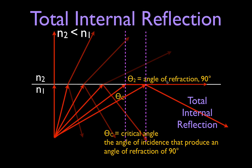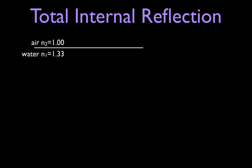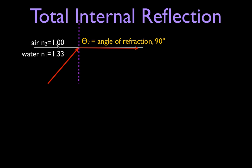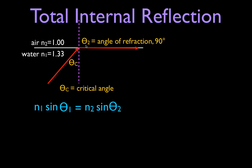Now let's calculate and derive the equation for the critical angle. We have a light ray striking that surface, coming up from a material with a higher index of refraction. On the other side of the boundary, it's a material with a lower index of refraction — that meets our first condition. If we have the right angle, that angle of incidence will produce an angle of refraction of 90 degrees, and we want to know what angle produces that. We're going to use Snell's Law.